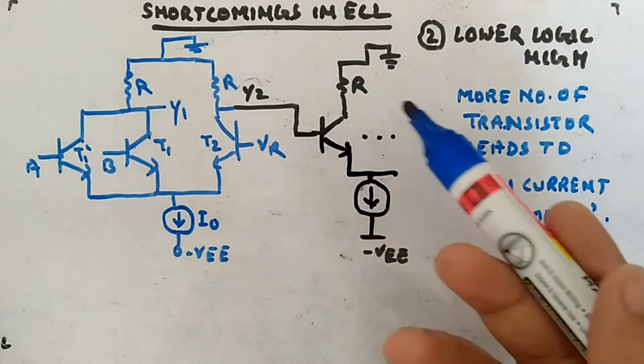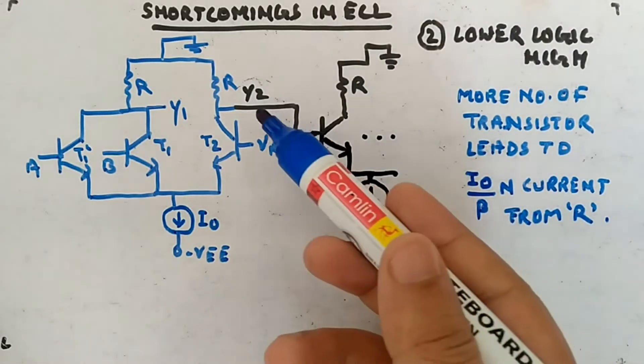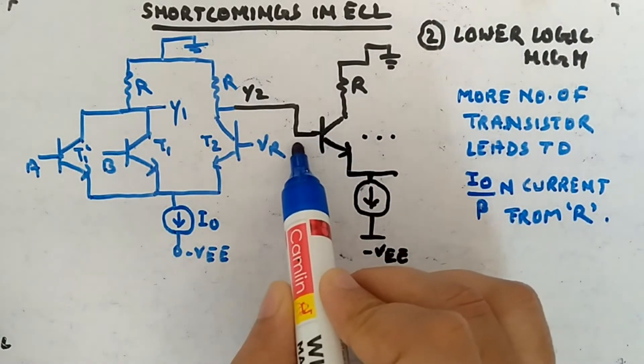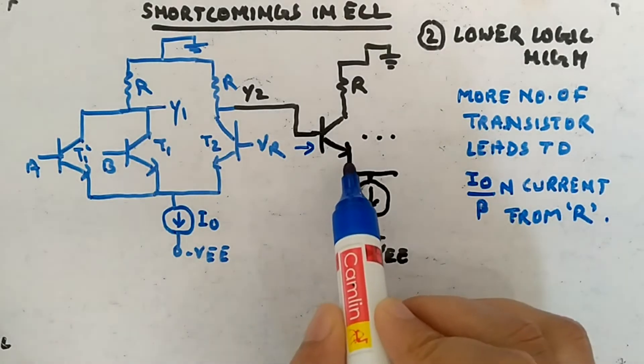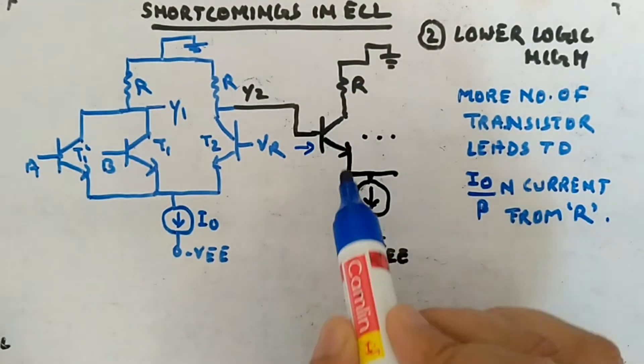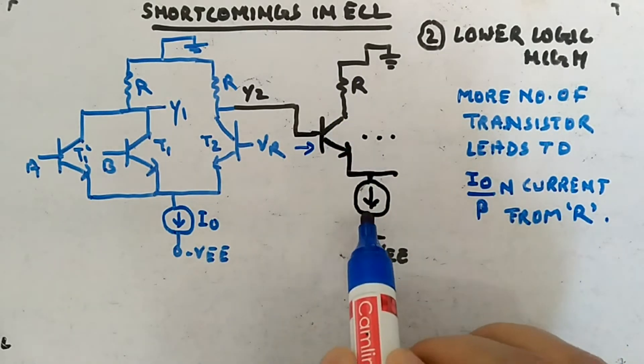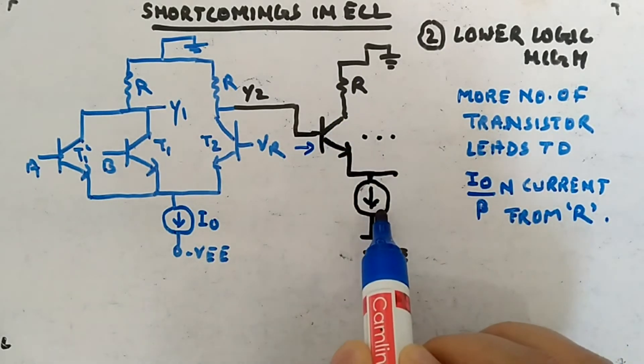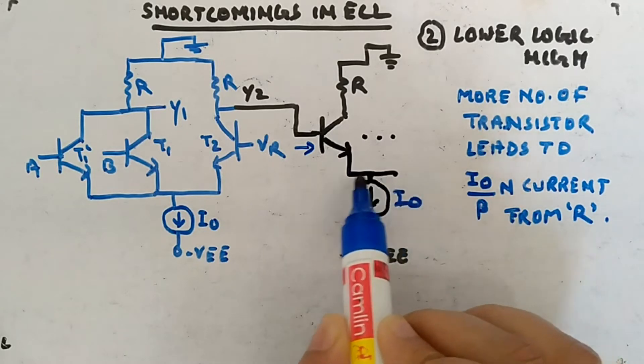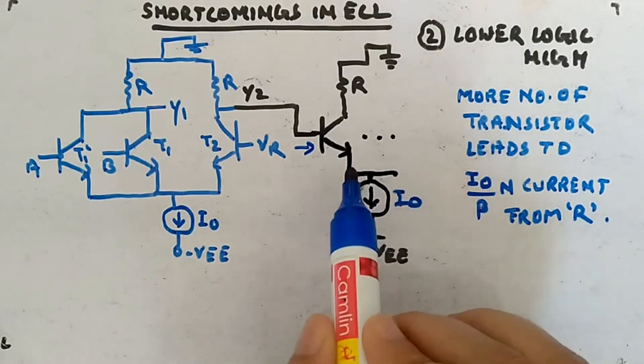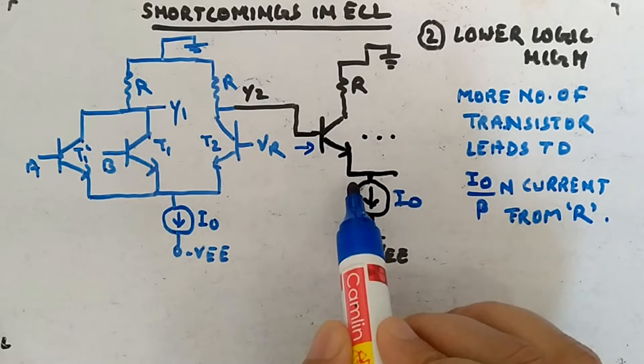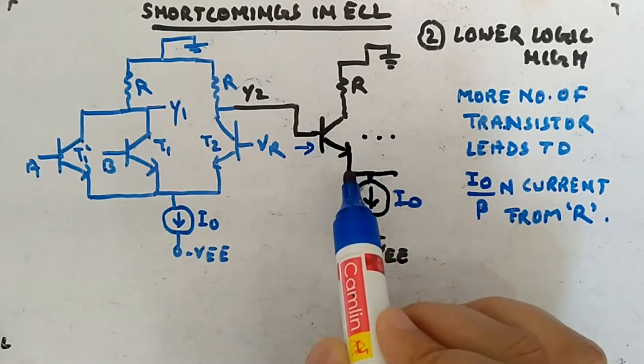Close to ground voltage you apply, it will start conducting. Away from ground it will not conduct because it is working on negative supply. If it will conduct it will draw some current. Here this guy is conducting, so all the current I0 will be flowing through this transistor. I0 which was divided among the other transistors is now flowing through all of this transistor.